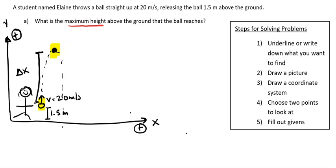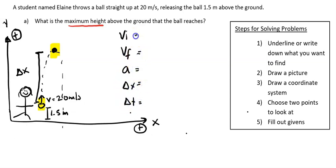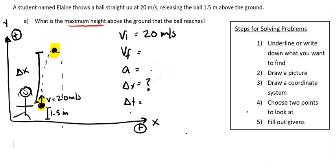I have two points where I know information. Now I'm going to go ahead and fill out my givens — I'll set up vi, vf, a, delta x, delta t. We're going to use these constant acceleration equations because acceleration due to gravity is always 10 meters per second squared. My initial velocity is 20 meters per second. I only fill out the things I definitely know. My acceleration is pointing downwards, so I have to say negative 10 meters per second squared.